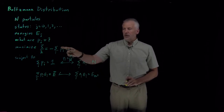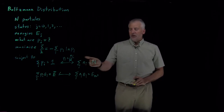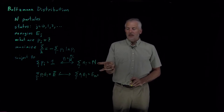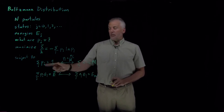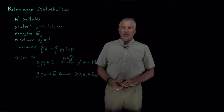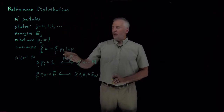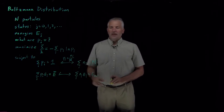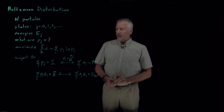We'll solve this problem in terms of probabilities, so we'll use those two constraints. One way of thinking about them: the constraints in terms of molecules are extensive constraints — if I double the size of the system, the energy and N both double. The constraints in terms of probabilities are intensive — they tell us something only about probabilities and averages, not the total amount of material. So our problem is to find the probabilities that maximize the entropy subject to these two constraints, using Lagrange multipliers.